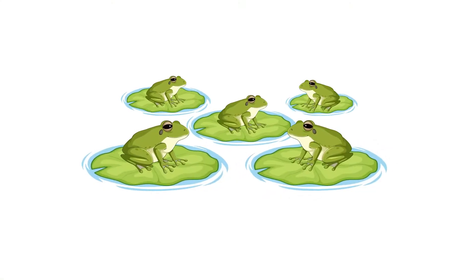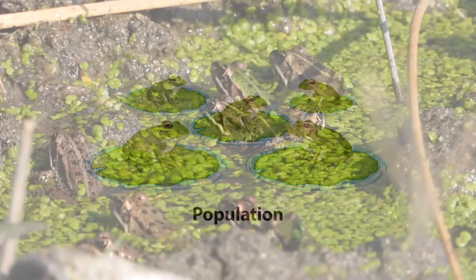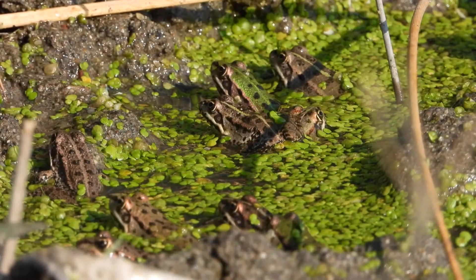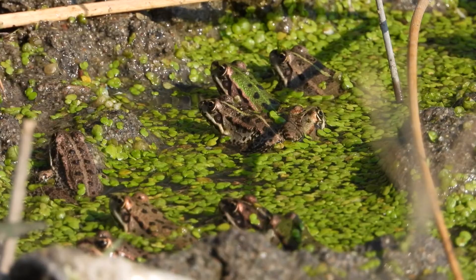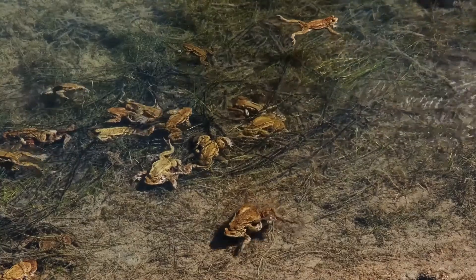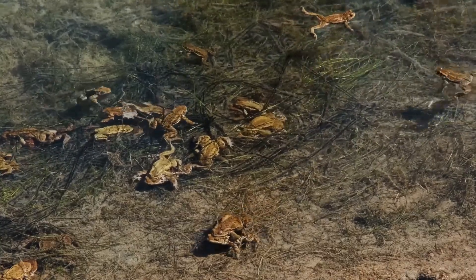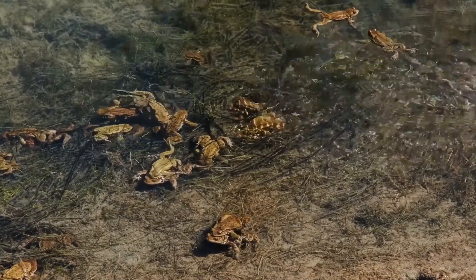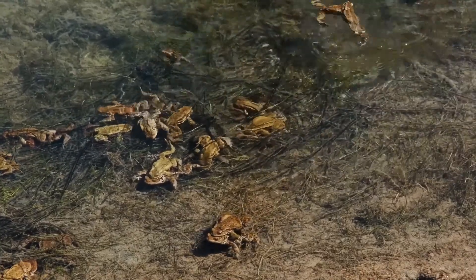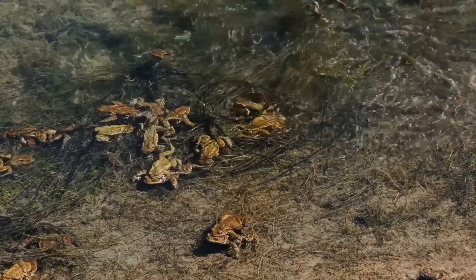Next is the population level, encompassing all individuals of the same species in the ecosystem. In our pond, it's not just one frog, but all frogs together. They breed, compete and thrive as a group, influencing their species' future in the pond.